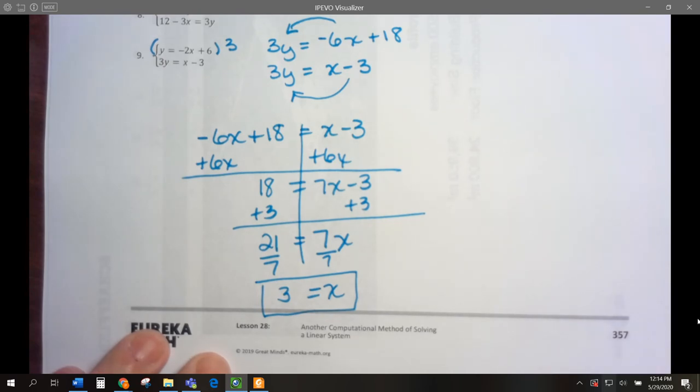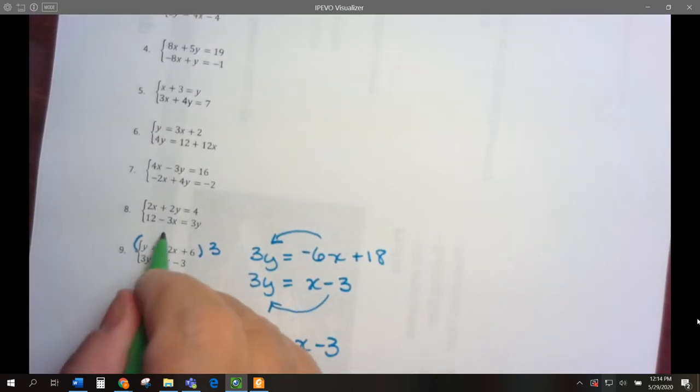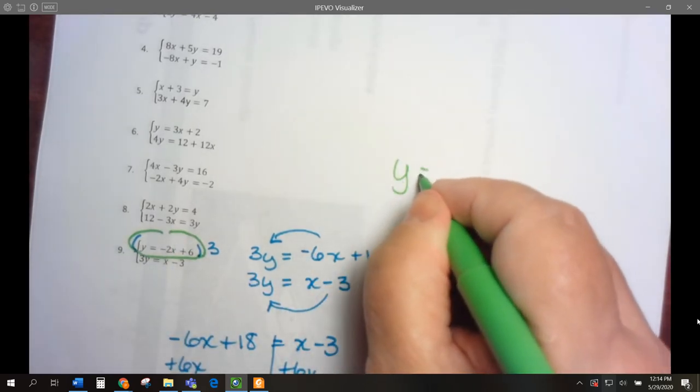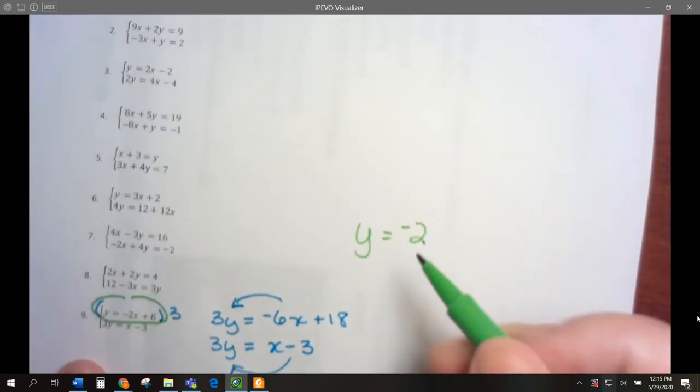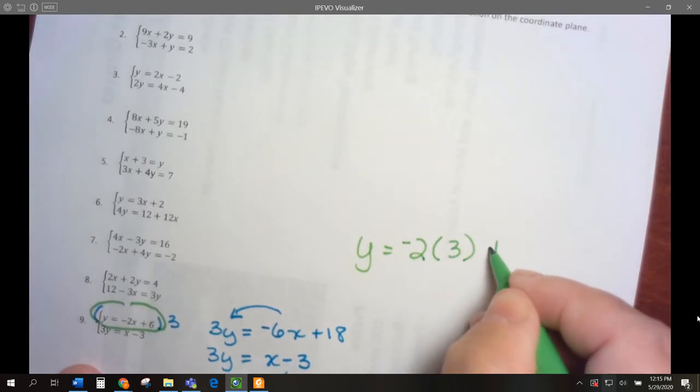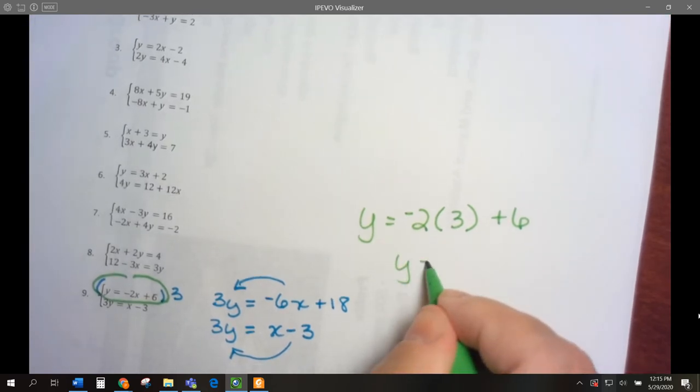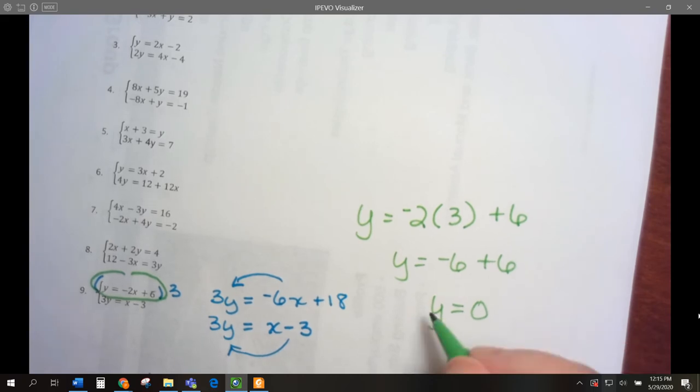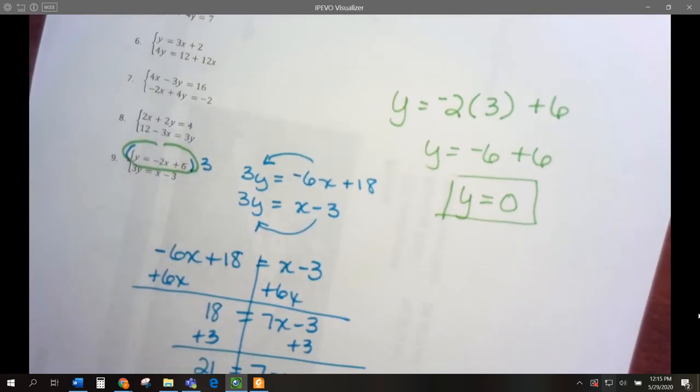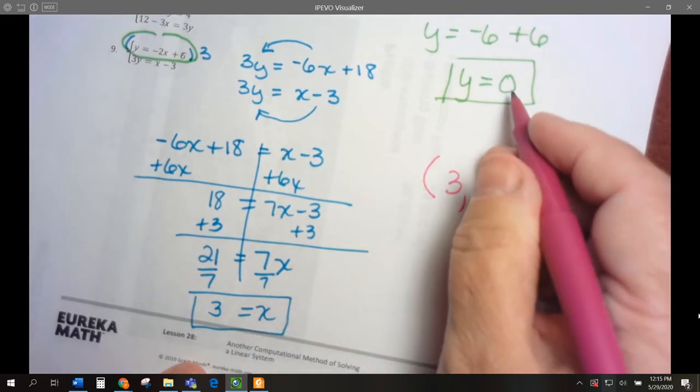So we know x is 3. Let's put that x is 3 into this top equation. y equals negative 2 times x. We know x is 3, so negative 2 times 3 is negative 6 plus 6. Negative 6 plus 6 is 0, so y equals 0. Our solution to this problem is x is 3 and y is 0.